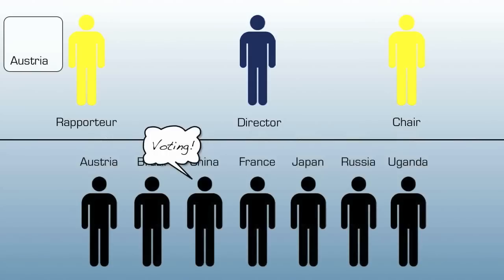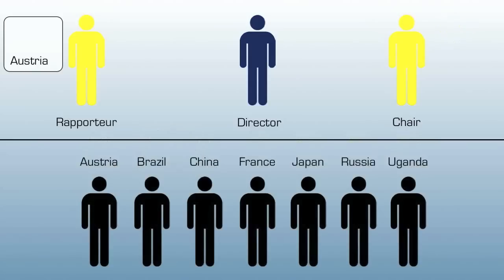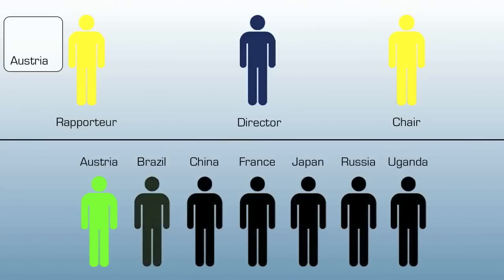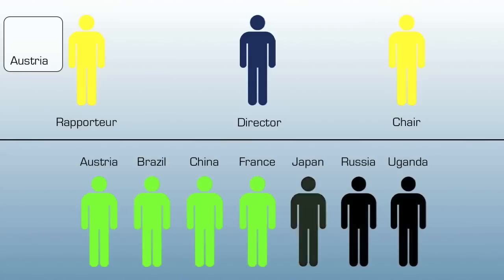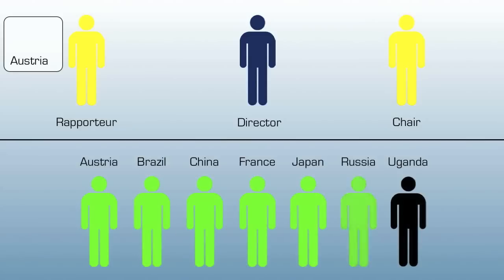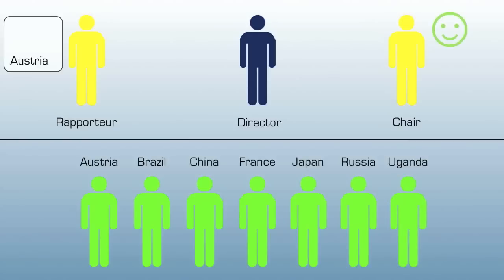Usually, we would not continue with the general speakers list. However, there is a motion from China to move into immediate voting procedure. This is in order and therefore put to a vote. Again, for a procedural vote, delegates may move in favor or opposed but not abstain. This time, it is unanimous. This motion clearly passes.